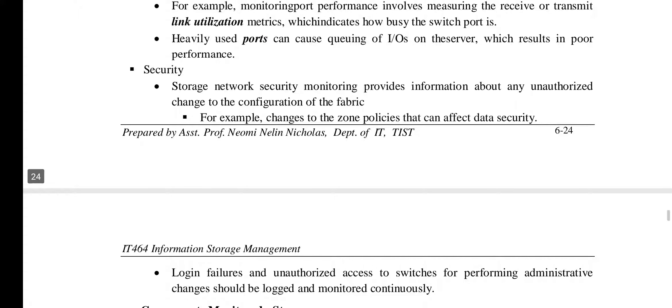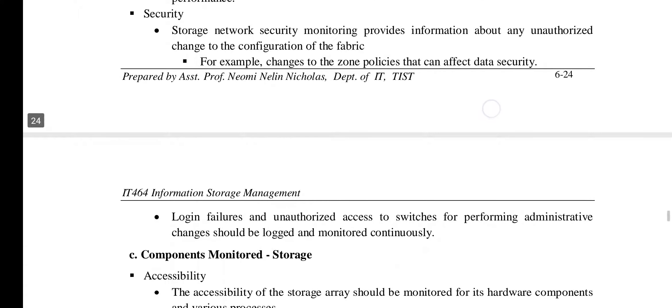The performance parameter of a network is useful in assessing individual component performance and identifying network bottlenecks. This includes link utilization metrics and similar measurements.